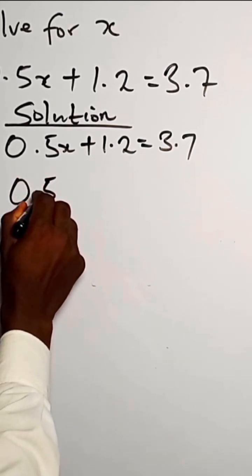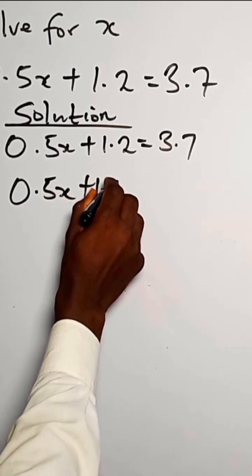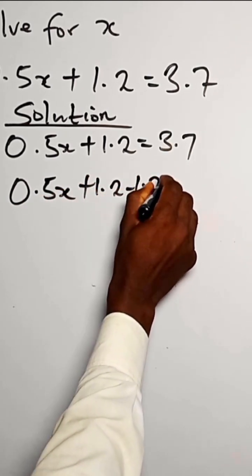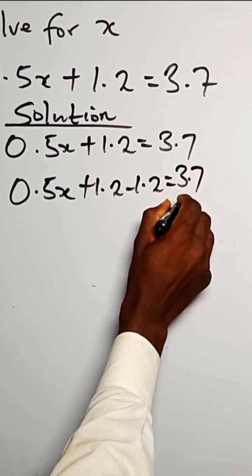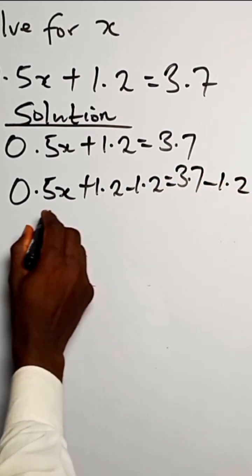So we have 0.5x plus 1.2 minus 1.2 equals 3.7 minus 1.2.